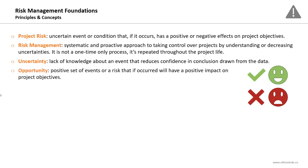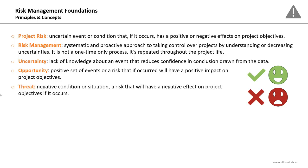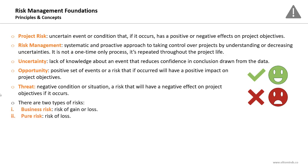Whenever there is an uncertainty, there is a potential risk. An opportunity is a positive set of events — a risk that if it occurs will have a positive impact on project objectives. So a risk can be an opportunity or a threat: an opportunity has a positive impact on project objectives, while a threat has a negative impact or effect on project objectives.